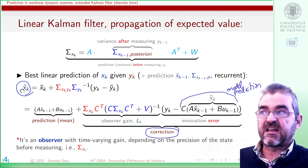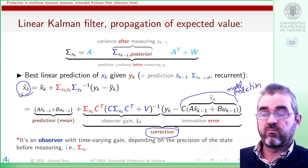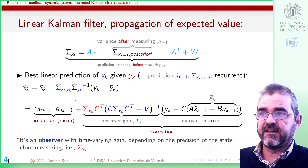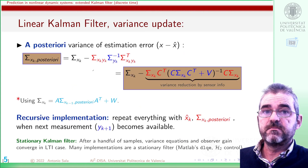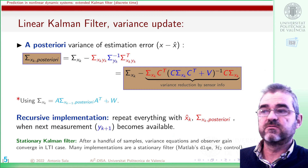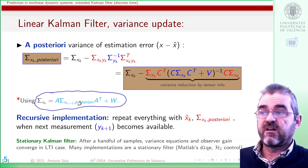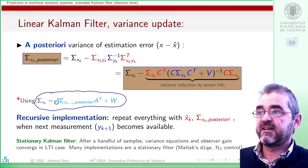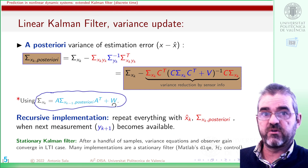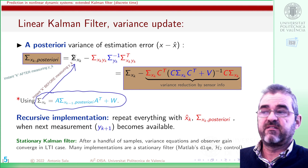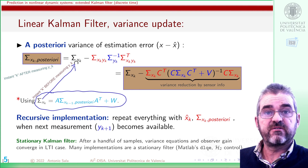So I get the new expected value of my process state. This is an observer with time varying gain. Also the variance update equation is as follows. The variance after previous measurement multiplied by A transpose plus the noise accumulation during one sample gets me my variance before measuring y_k, the output at instant k.